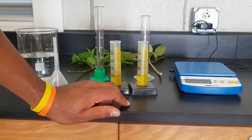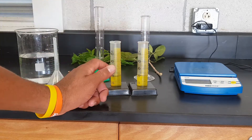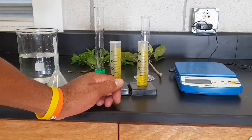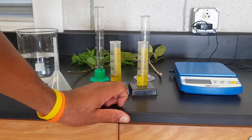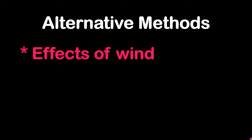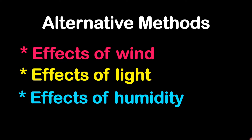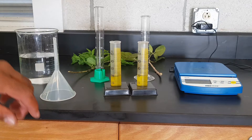For this experiment I'm going to look at transpiration rate in different plants. We can use this experiment to look at how light affects transpiration rate, or we can also compare wind or even humidity. Alternative methods include the effects of wind, which we're doing today, effects of light, effects of humidity, or we can do a combination of factors.